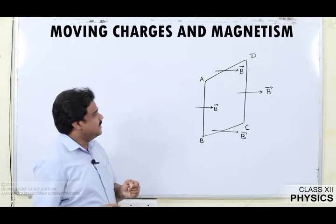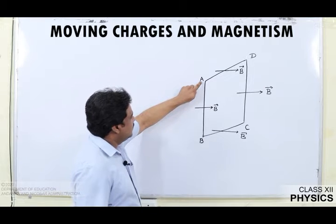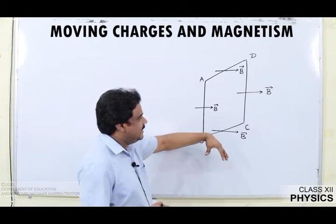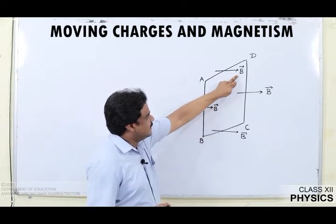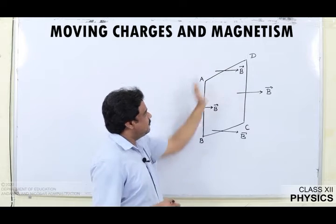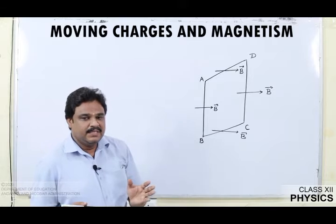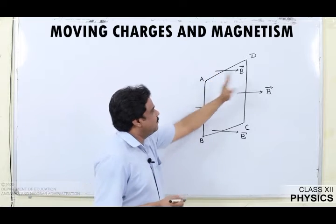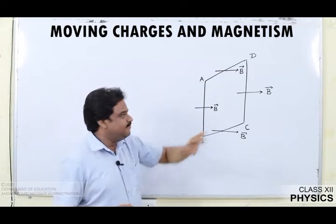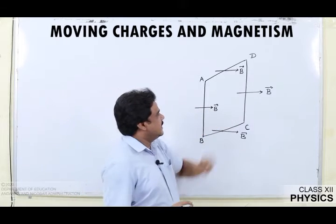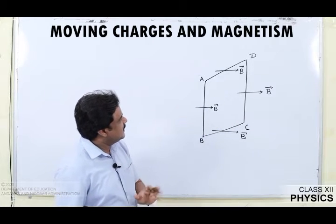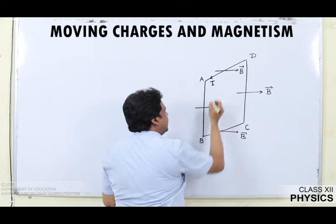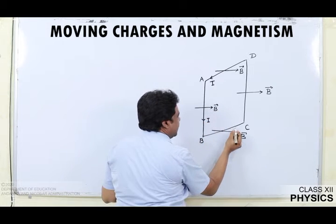Let us get into the derivation. I am going to consider a rectangular loop ABCD, which is suspended in a magnetic field. The magnetic field acts in the plane from left to right. I marked the magnetic field for each arm of the rectangular loop. Let each arm carry a current I, as shown. I is the current flowing through the rectangular loop.